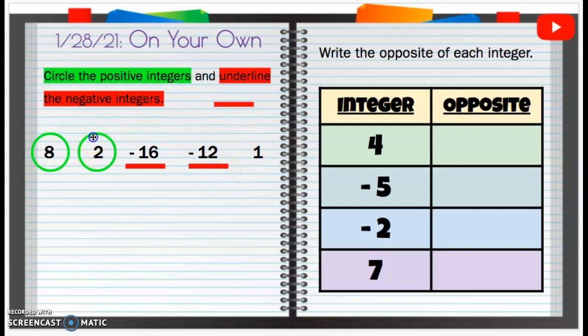And positive 1. I need to get another circle there. Positive 1 is going to be positive. All right, so we're going to circle that.